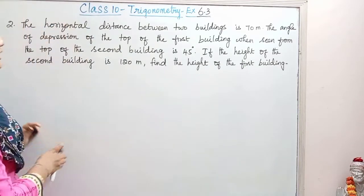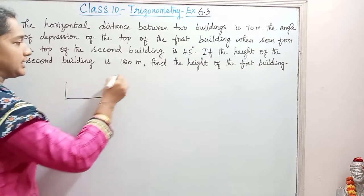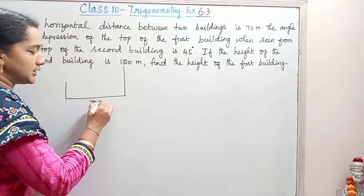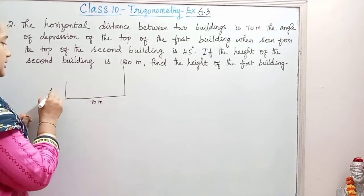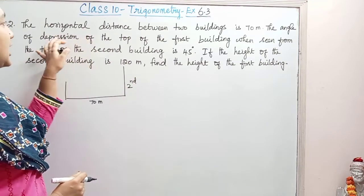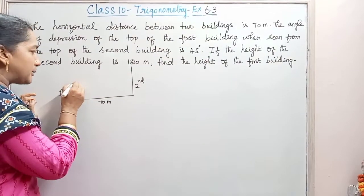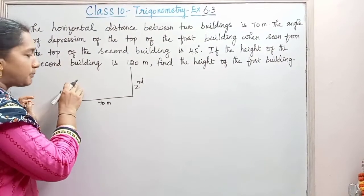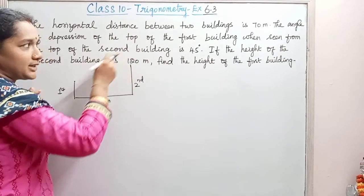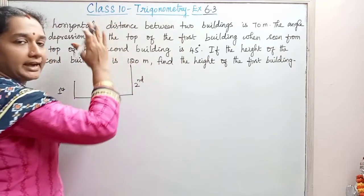This is the question given. The horizontal distance between two buildings is 70 meters — this is one building and this is another building. This one is the first building and this is the second building. The angle of depression of the top of the first building, when seen from the top of the second building — so obviously, with the given information, the second building is higher than the first one.